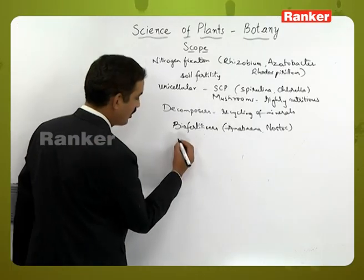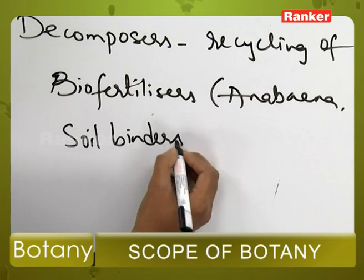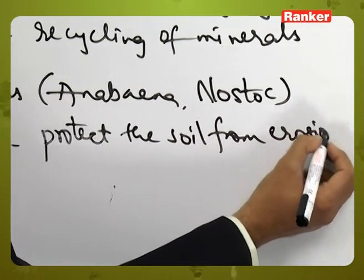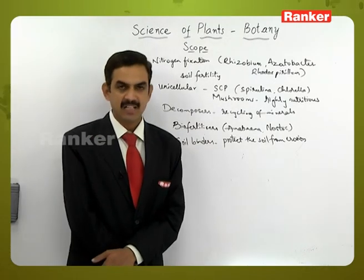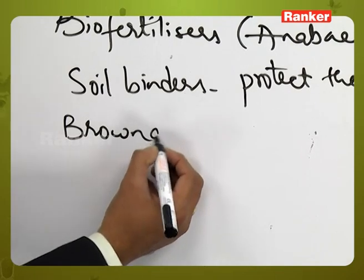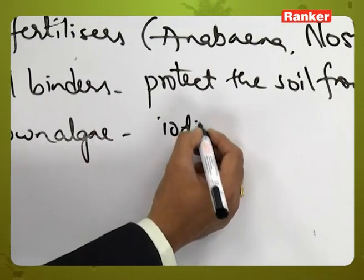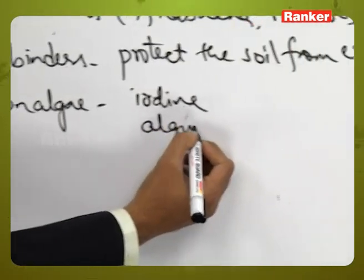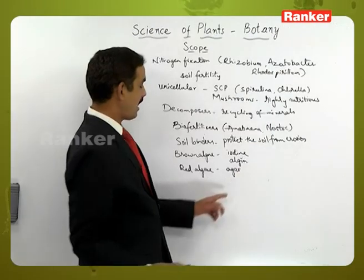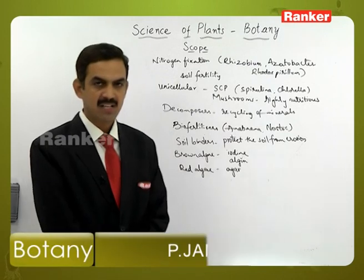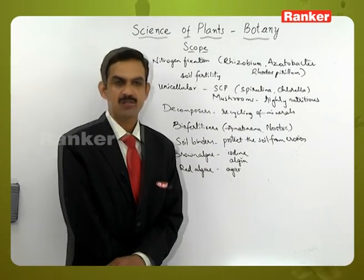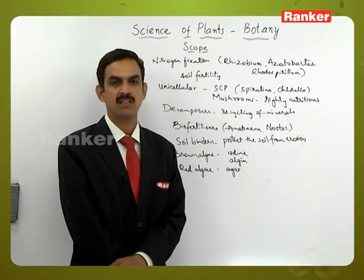Some plant species act as soil binders, protecting soil from erosion. Brown algae are useful in the production of iodine and algin compounds. Red algae are useful for production of agar, which is used for culturing microbes. From unicellular microscopic algae to highly developed angiosperms, human beings exploit characteristic plant features for the development of life processes.